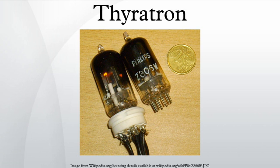A hot cathode is at an advantage, as ionization of the gas is made easier. Thus, the tube's control electrode is more sensitive. Once turned on, the thyrotron will remain on as long as there is a significant current flowing through it. When the anode voltage or current falls to zero, the device switches off.